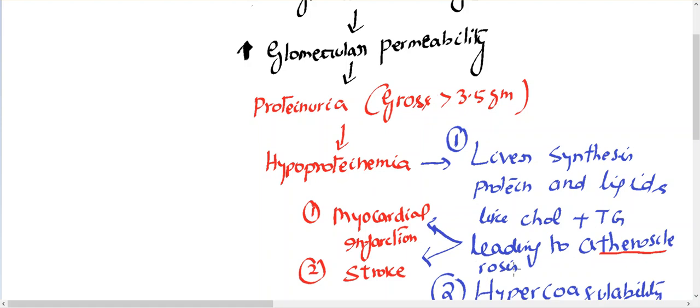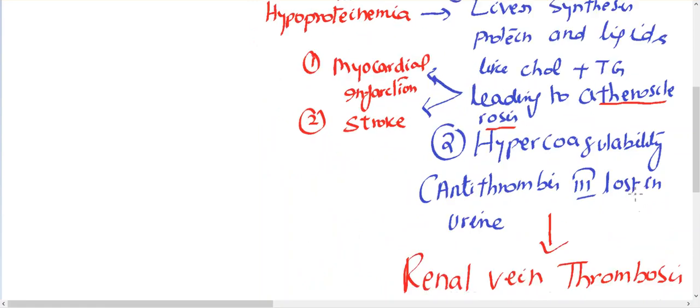And this atherosclerosis can be prone to develop myocardial infarction and stroke. That is why patients with nephrotic syndrome are prone for myocardial infarction and stroke. The reason is due to the lipid - there is more lipid synthesis in the form of cholesterol and triglyceride leading to atherosclerosis and MI and stroke.